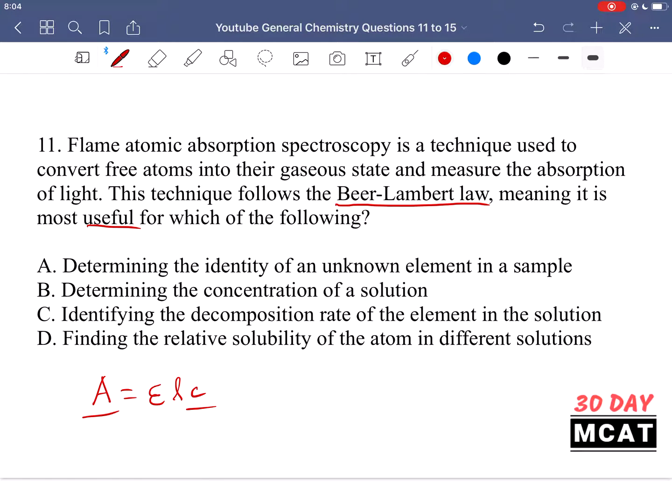So option A is saying that it's useful for determining the identity of an unknown element in a sample. It could be used for that, but it's not the thing that it's most useful for. Usually what you're doing is you already have a standard and you set up some curve so you know that different concentrations, the absorption of that specific element is at a certain intensity for the absorption. At a certain concentration, it's this much absorbance. And then you can detect if your sample has that certain element or not, but you need a standard first. You can't just look at the spectroscopy, that output, and then from that immediately determine what the element is in your unknown solution without having some sort of standard or reference first.